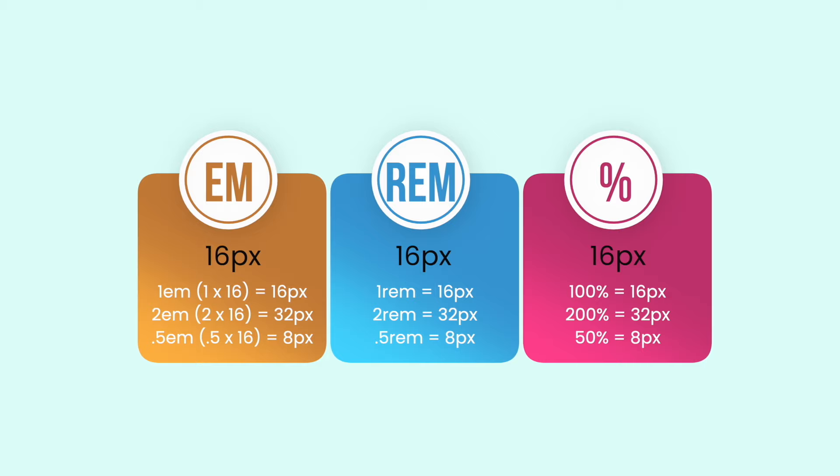REM works in the same way, and percent as well. So 200% is the same as 32 pixels, and 50% is 8 pixels.